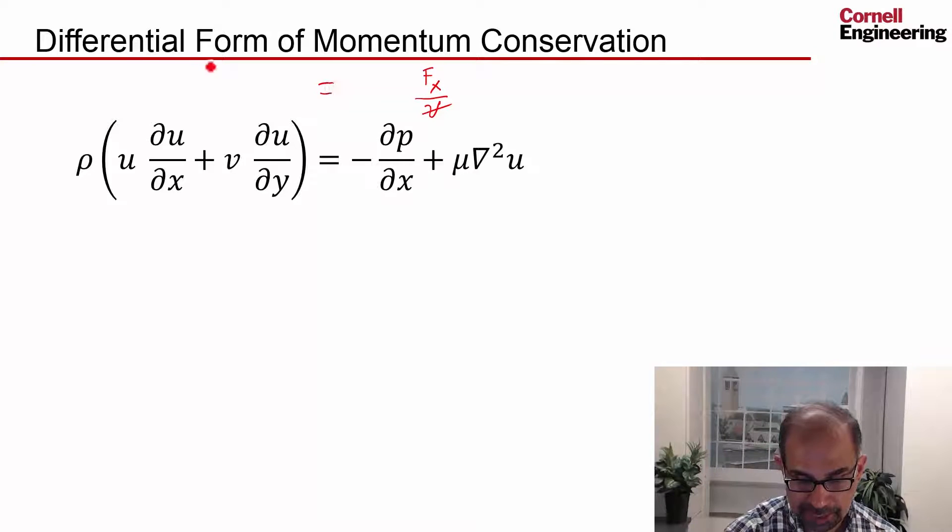And on the left-hand side, we have mass times acceleration in the x-direction, and again, this is per unit volume, which is why you get the density here.